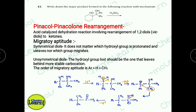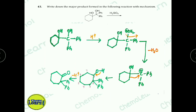Migratory aptitude plays an important role here. For an unsymmetrical diol, we must determine which OH group gets protonated — it is the one on the carbon that gives the more stable carbocation. The OH is removed from the carbon that generates a more stable carbocation, stabilized by resonance with the phenyl group. Then, from the adjacent carbon, the group migrates. In this case, migration leads to formation of a seven-membered ring, followed by deprotonation to give the final ketone product.